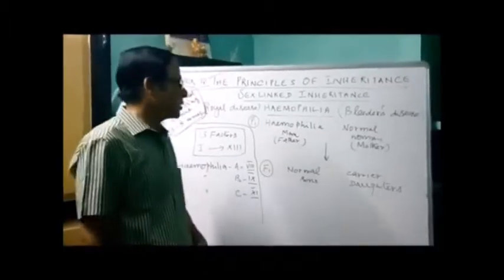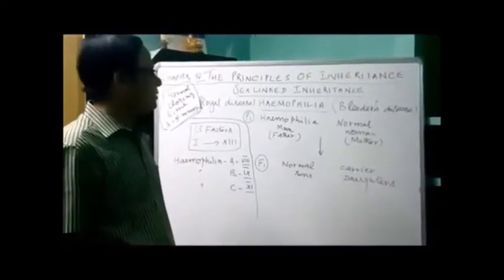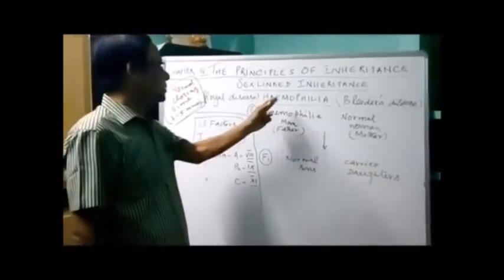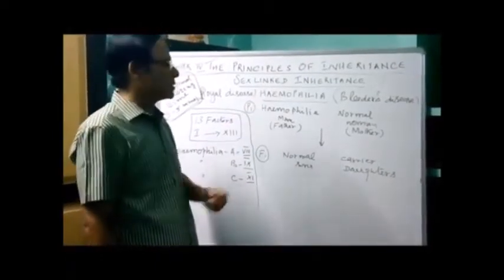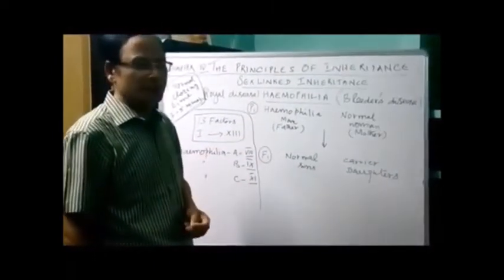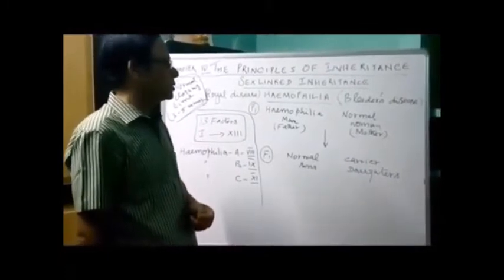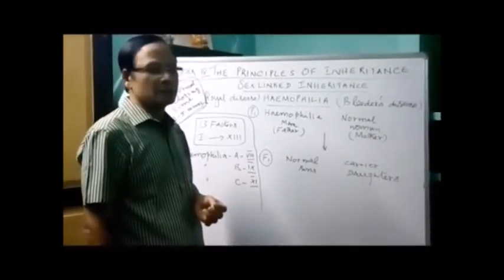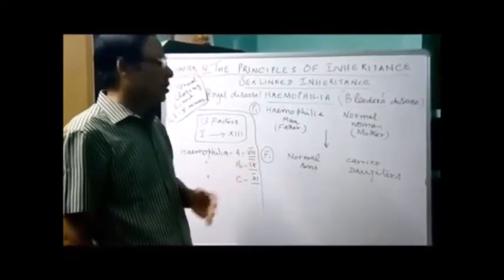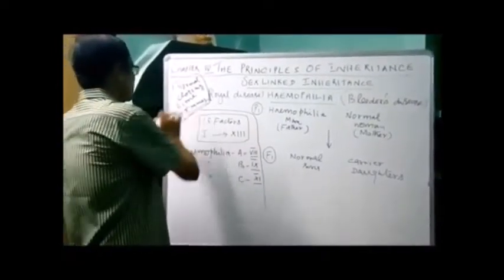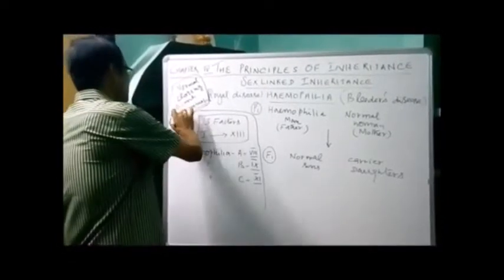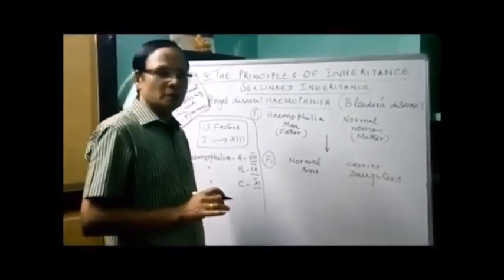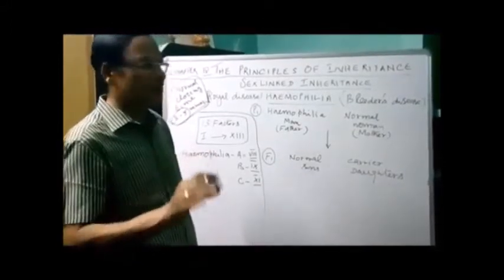I want to continue the sex-linked inheritance with another trait, that is hemophilia. It is otherwise called 'bleeders disease.' At the time of injury, when bleeding occurs, the normal clotting time is 3 to 5 minutes, so that the blood becomes coagulated, preventing the loss of blood.